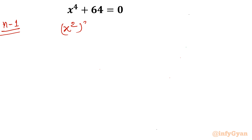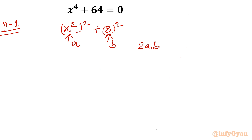Let me write my first term as x-squared, whole squared. The second term is 8 whole squared. If I want to frame this as (a + b) whole squared, I will consider this as my 'a' and this as my 'b'. I need to write here twice a·b, so I will write 16x squared.